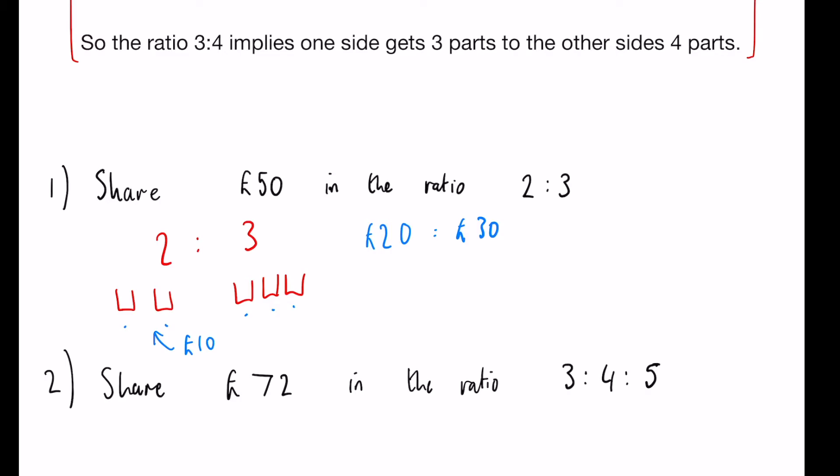Once you get more familiar with this, you'll see that we can just add these values together, 2 plus 3, then do 50 divided by the sum of the ratio values. So 2 plus 3 gives us 5, and that gives us 10. Then we share the 10 based on what we just did there.